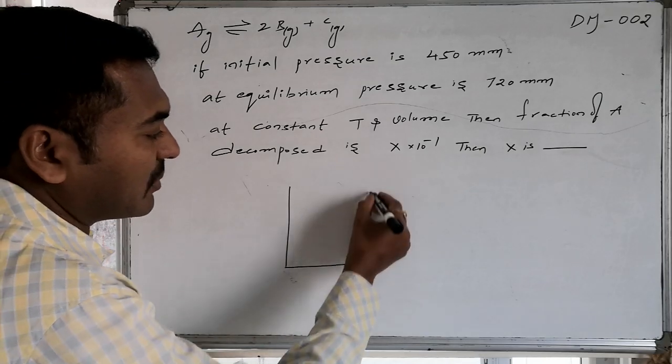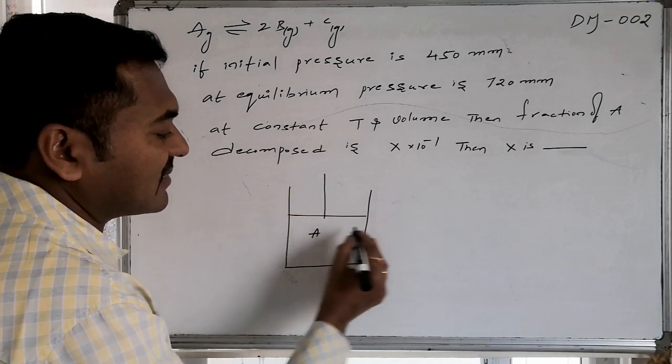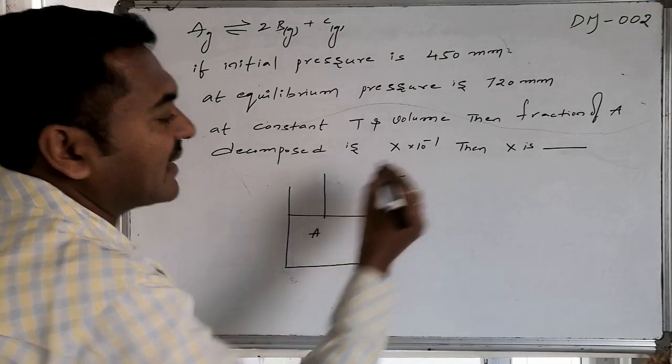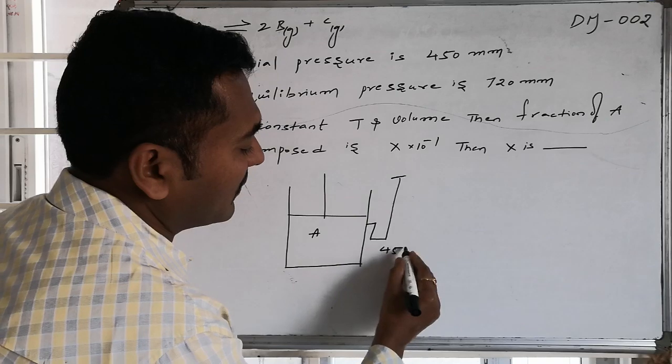Graphical understanding of the problem: there is a cylinder, in this there is a gas, A is a gas. Whereas as it is a gas, it is offering some pressure, that pressure is found to be 450 mm.